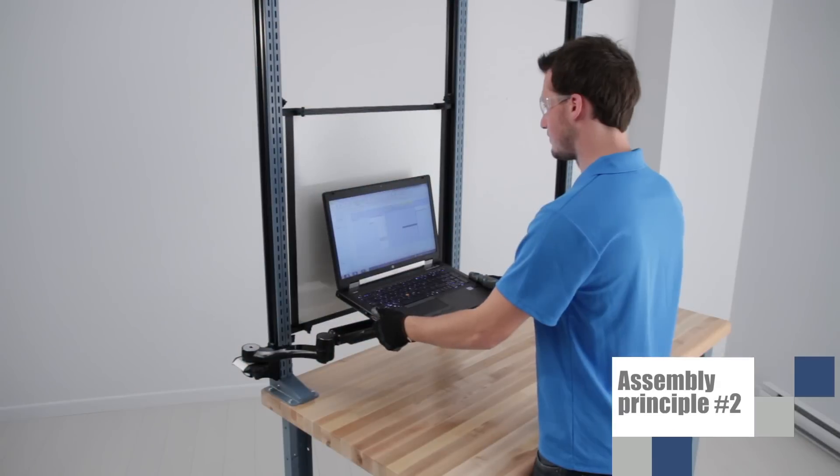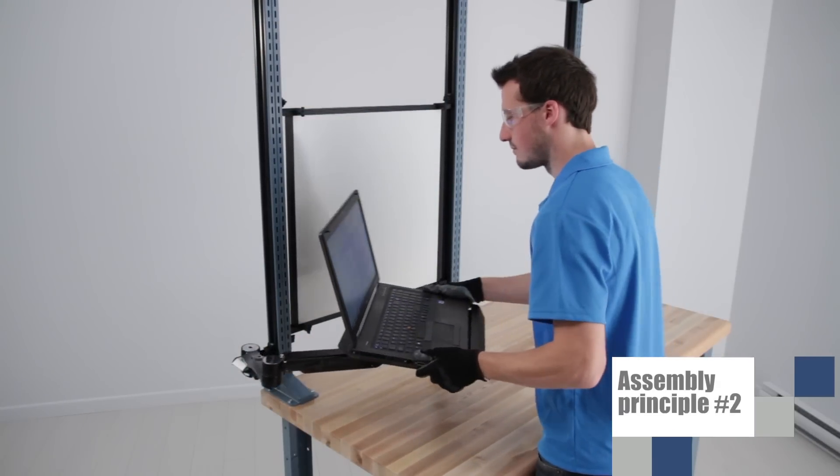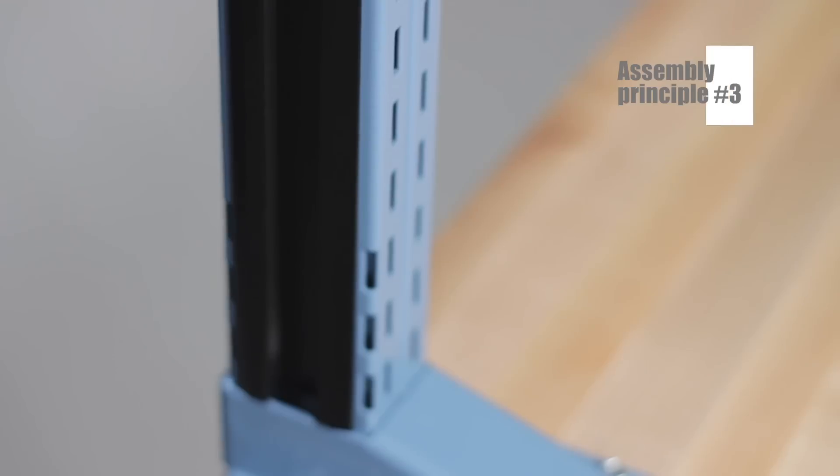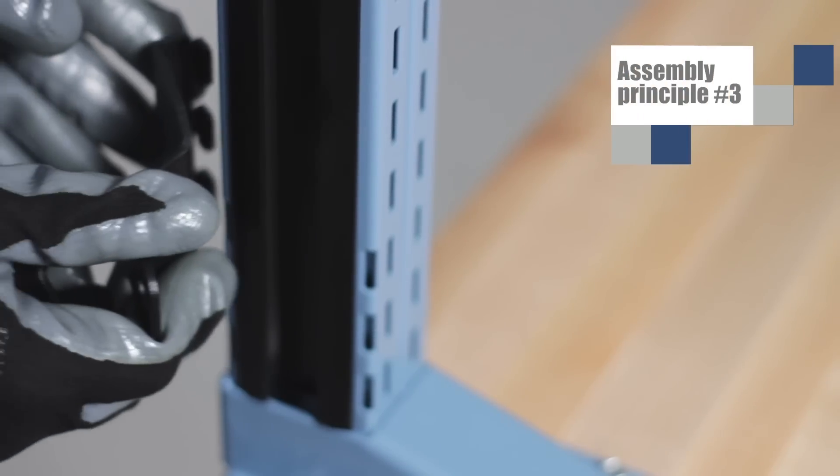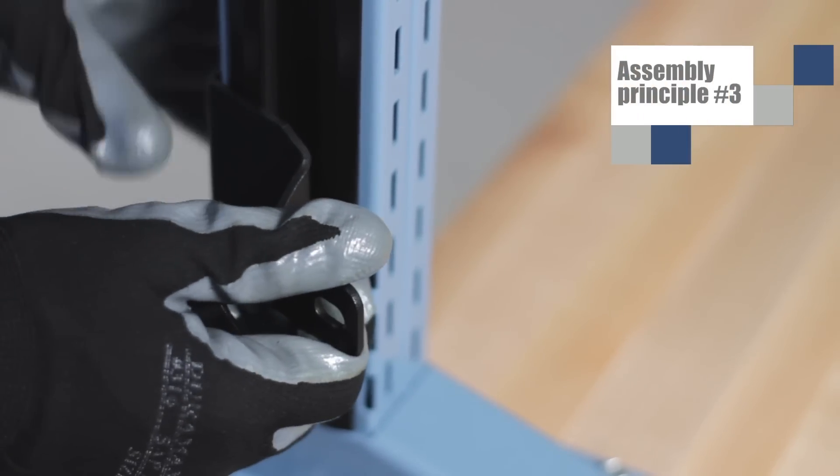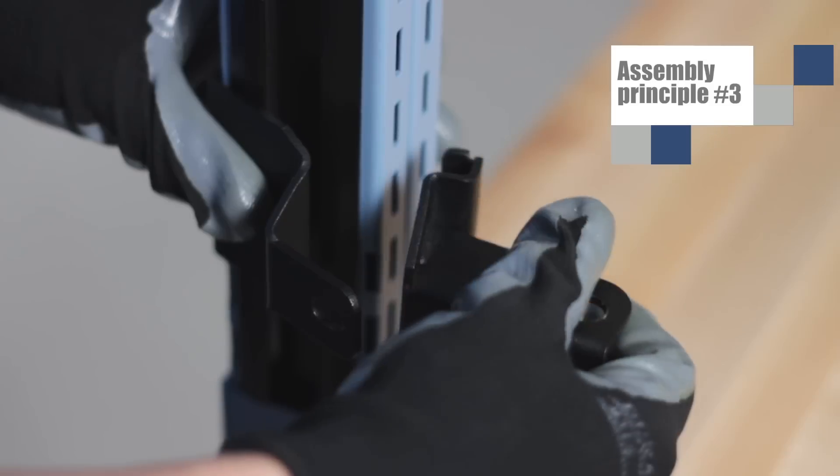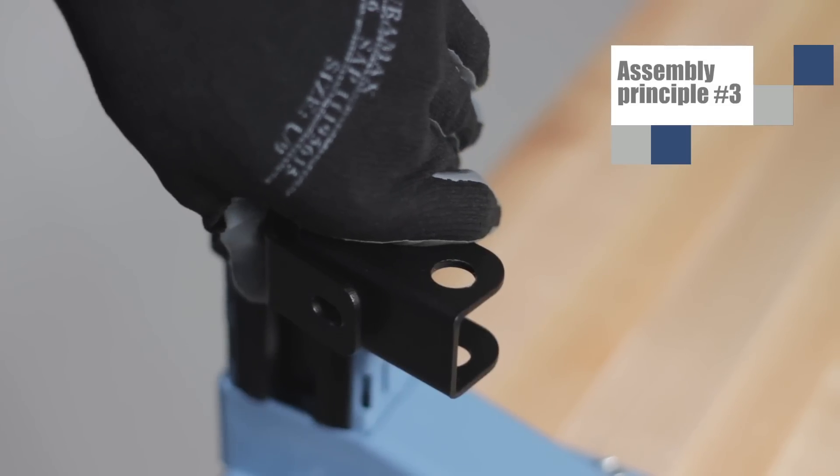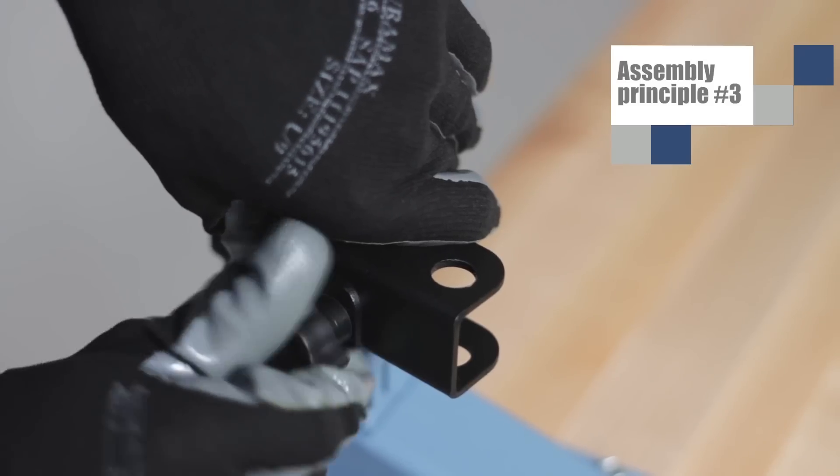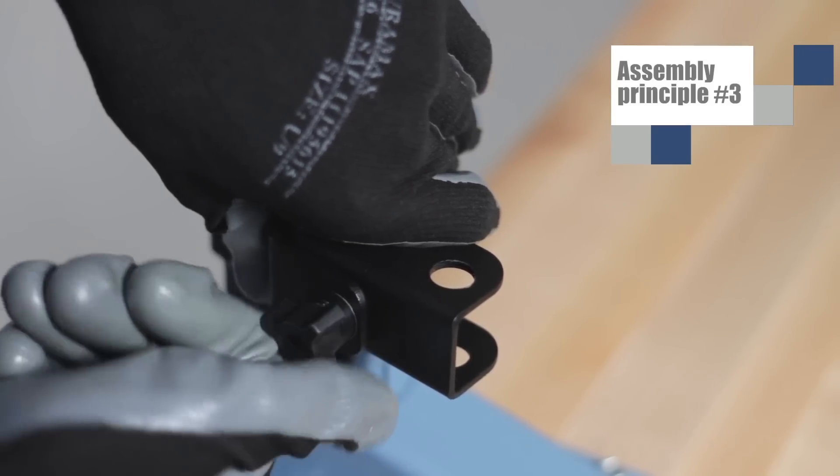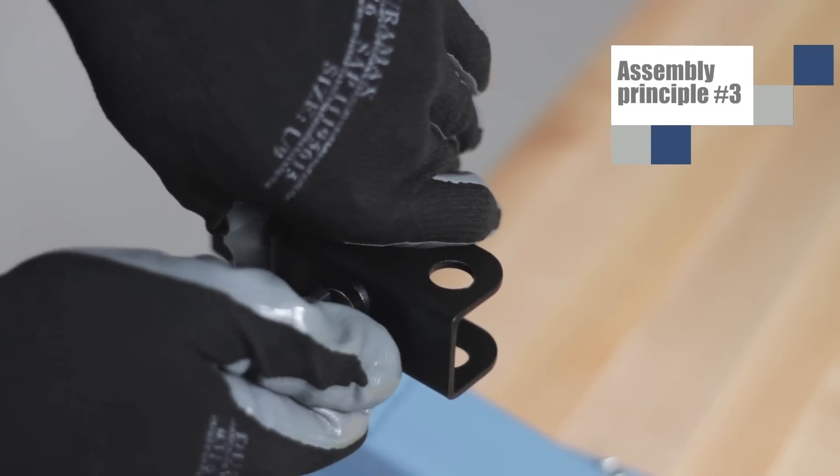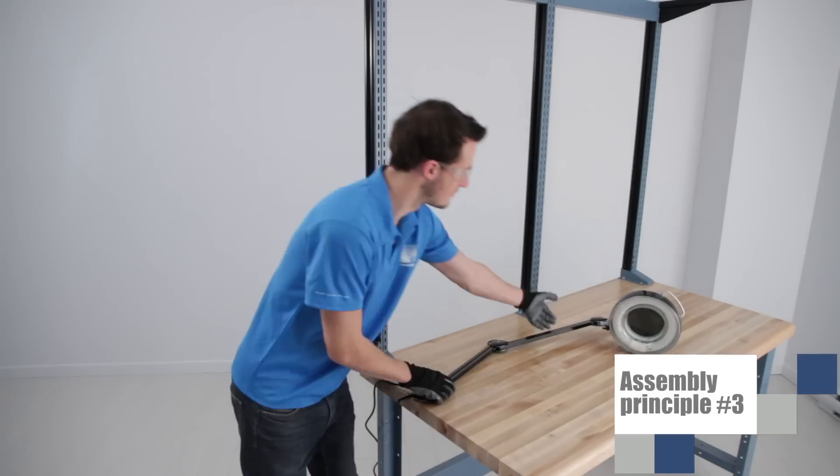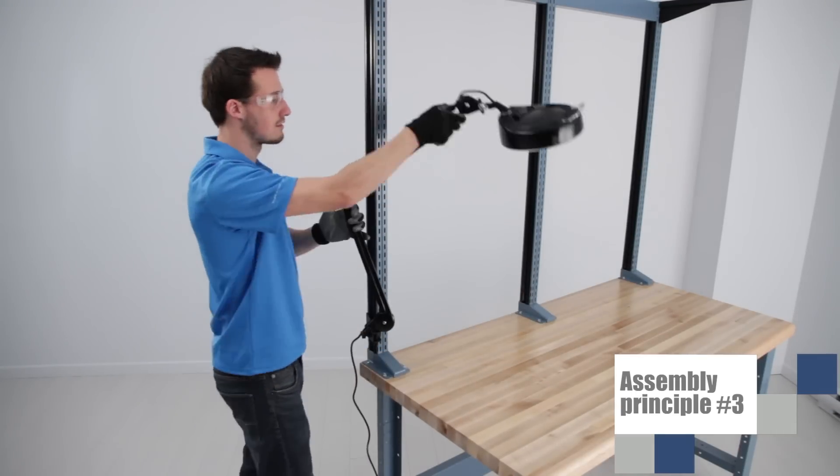The brackets for the new Rousseau articulating arms are also installed on the sides of the uprights. Another assembly technique uses the holes on the front and the back of the uprights. For example, with this adapter to install a light. Simply insert the two pieces and tighten. Solid and impossible to accidentally unhook.